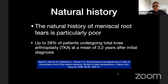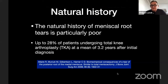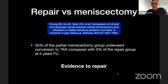What is the evidence in 2020 about posterior meniscus root tear repair? Regarding natural history, there is consensus that it is particularly poor. One study by Arner and colleagues found that up to 28% of patients underwent total knee arthroplasty at a mean of 3.2 years after initial diagnosis — truly alarming, and equivalent to a total meniscectomy. Comparing repair versus meniscectomy, one study showed 35% of the partial meniscectomy group underwent conversion to total knee arthroplasty, compared with 0% of the repair group at five-year follow-up. We must repair this meniscus root when conditions are favorable.